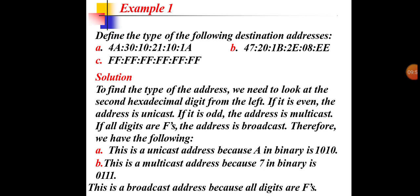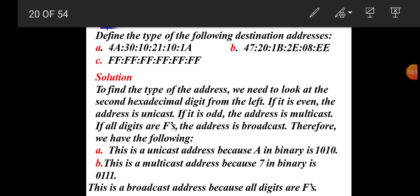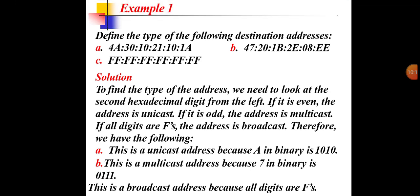Example — Define the type of the following destination addresses: Address A (4E:A3:01:21:10:1A) is a unicast address, because the first byte 4E in binary is 0100 1110 — the least significant bit is 0. Address B is a multicast address, because the first byte 47 in binary is 0100 0111 — the least significant bit is 1. Address C has all Fs, which is a broadcast address.